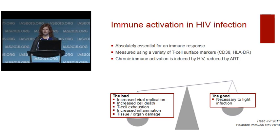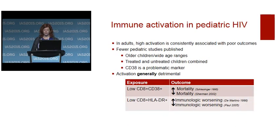In adults, high T cell activation is consistently associated with rapid progression, mortality, and poor response to ART. There are fewer longitudinal pediatric studies available, and some of those that exist have included mostly older children or very wide age ranges, and have assessed treated and untreated children together, which complicates the interpretation.